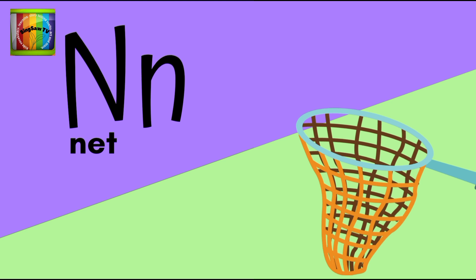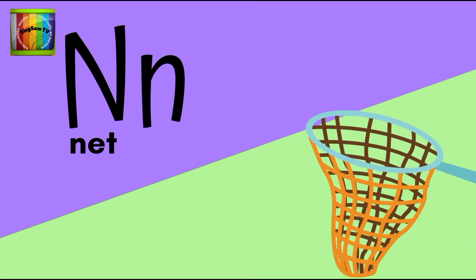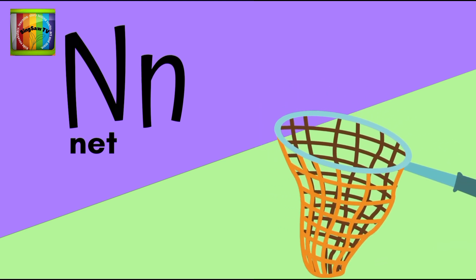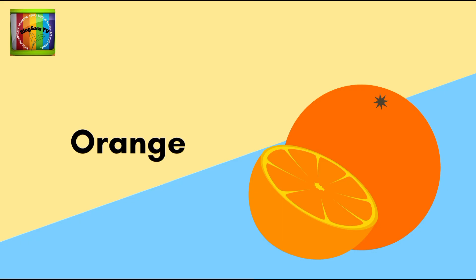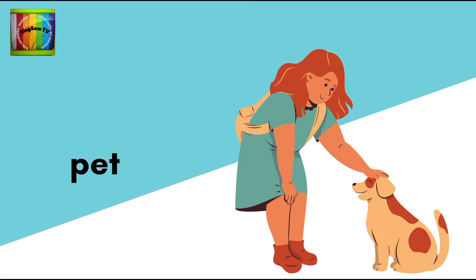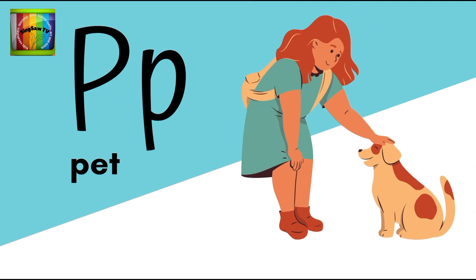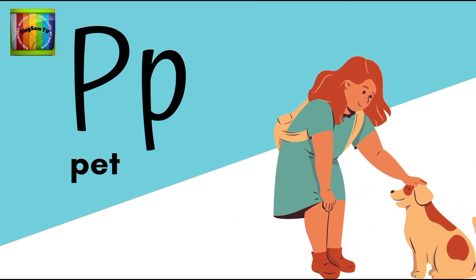N is for net. N, net. O is for orange. O, orange. P is for pets. P, pets.